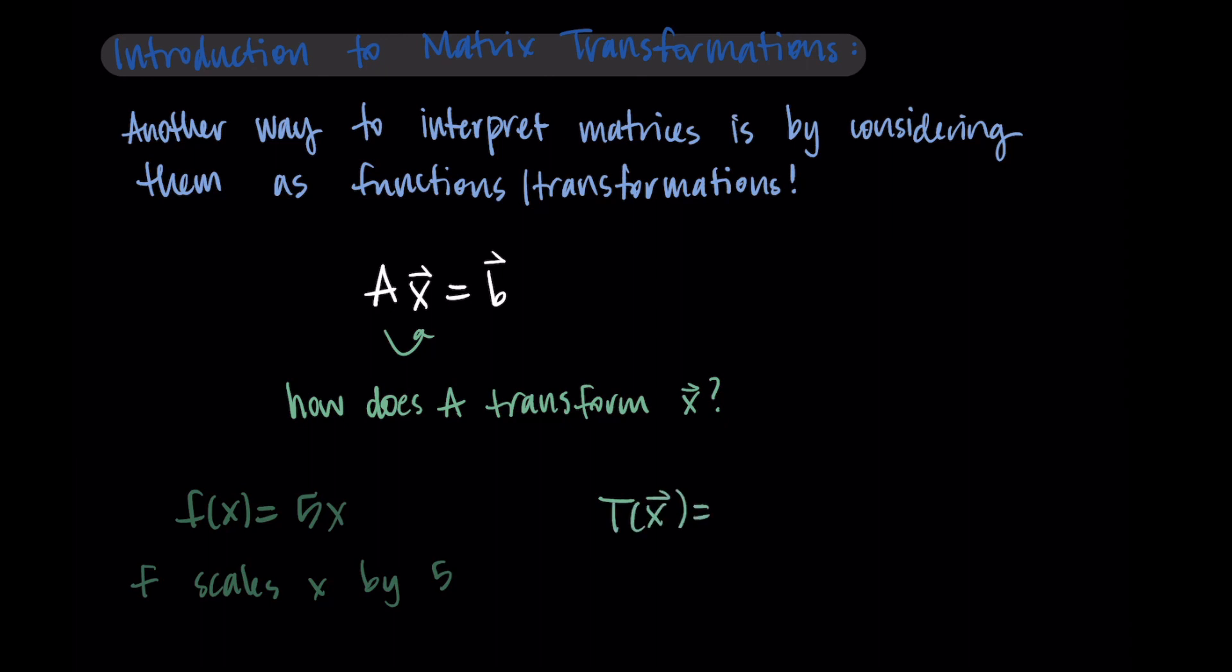So we can think of something similar with a matrix. Let's say we have a function T, and that's of an input vector x. And let's say it does something like a matrix times the vector. So the matrix A would be [3, 2, 1, 0]. And that matrix gets multiplied by the vector x. So what would we say that T does to x here?